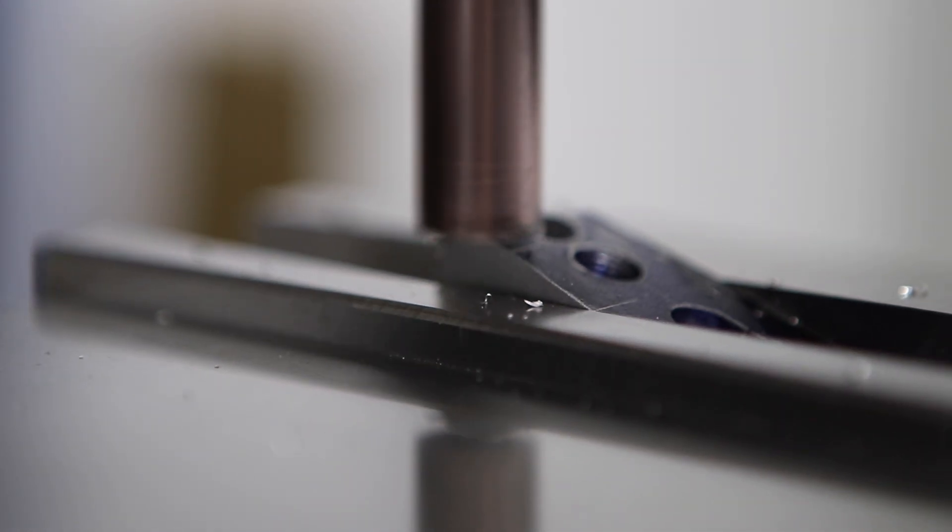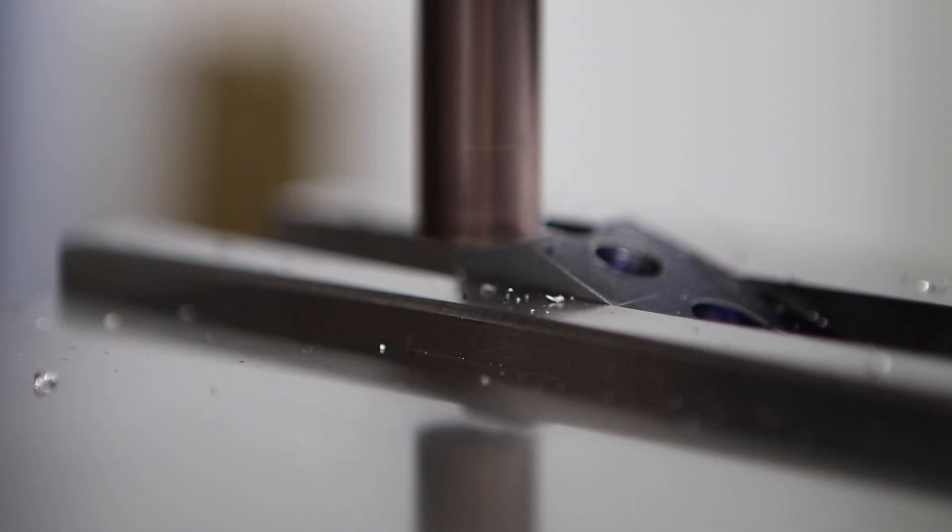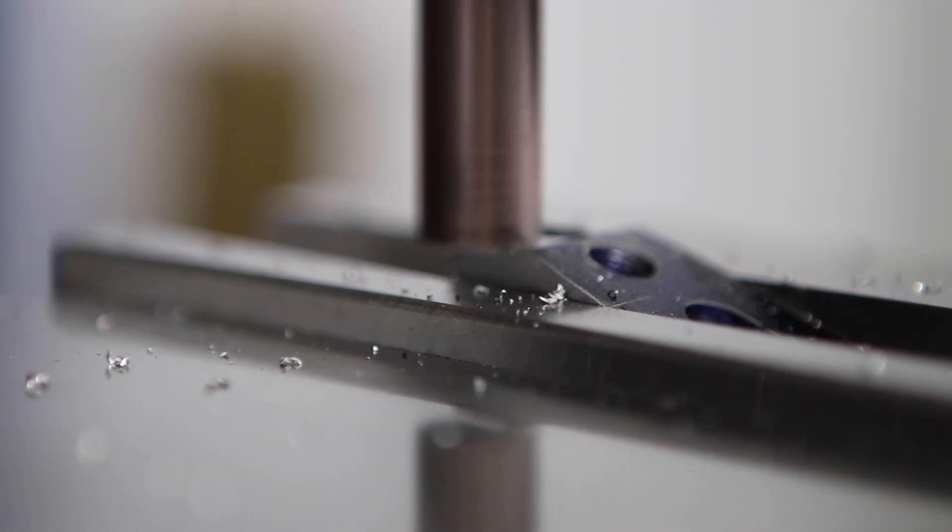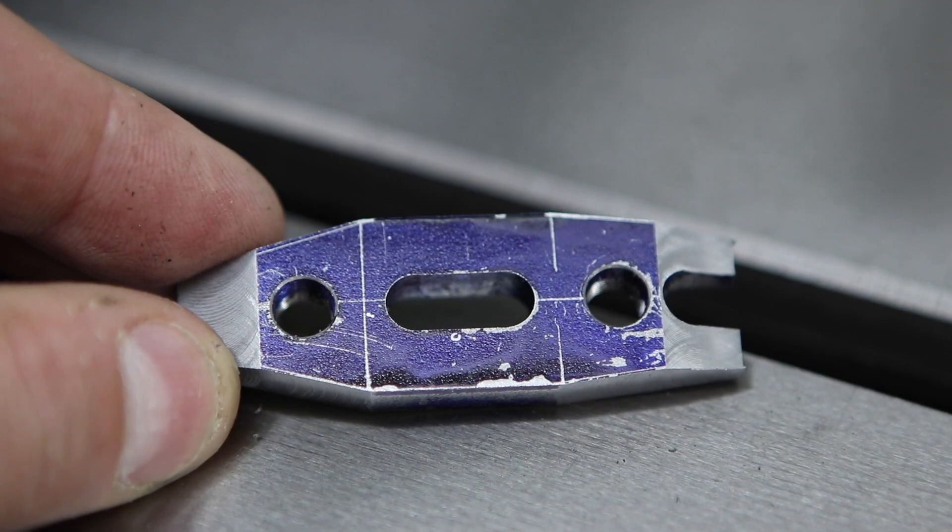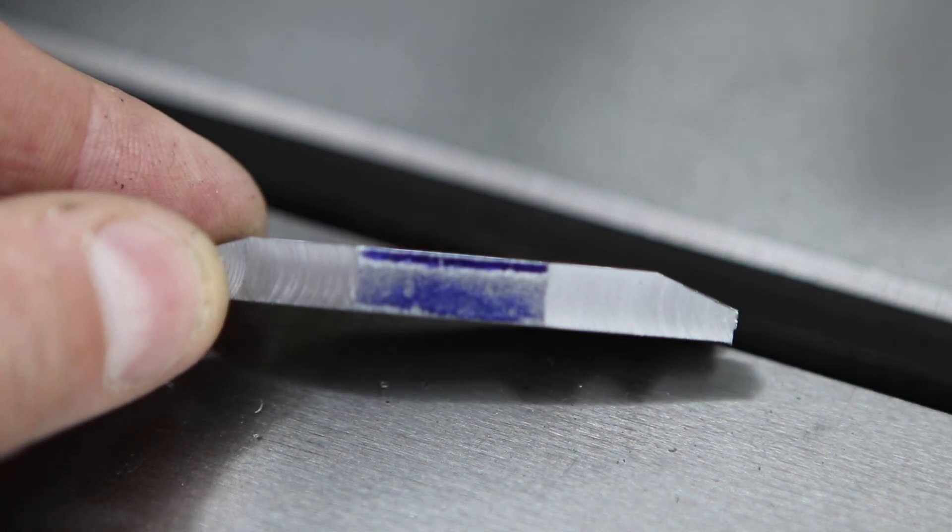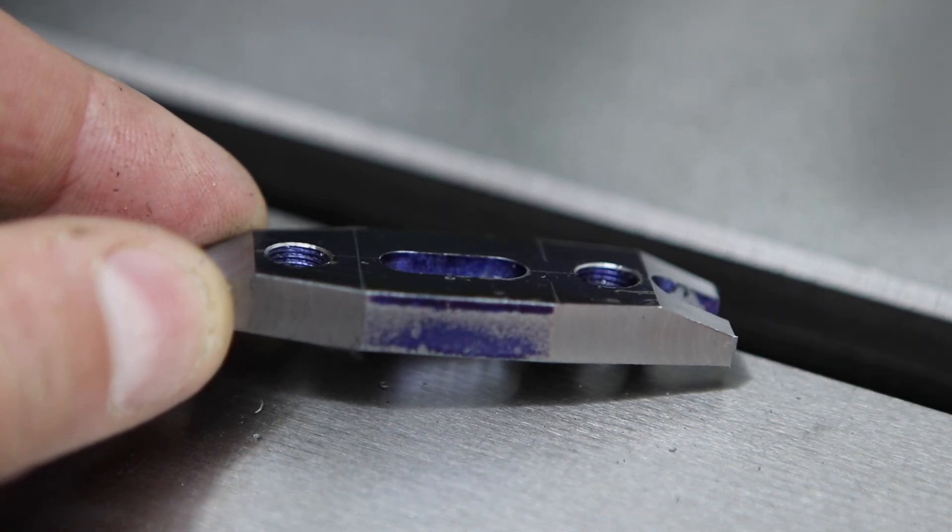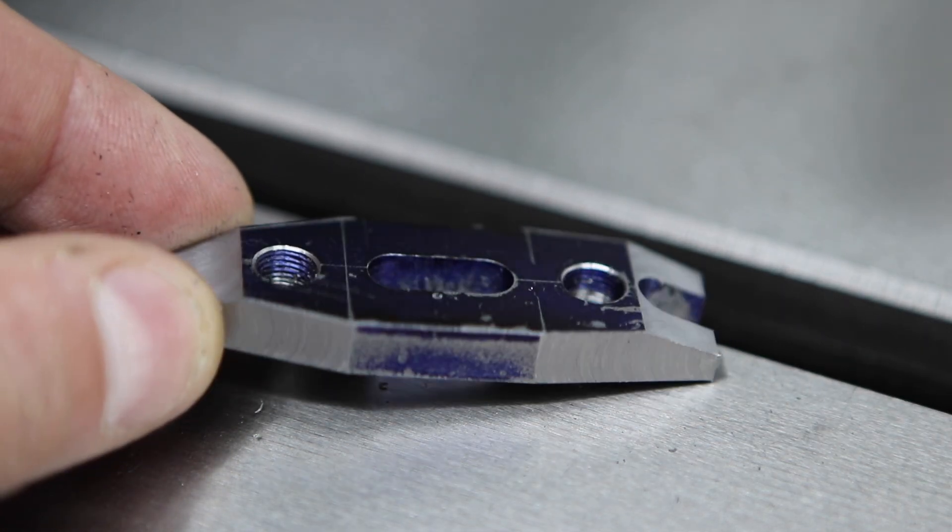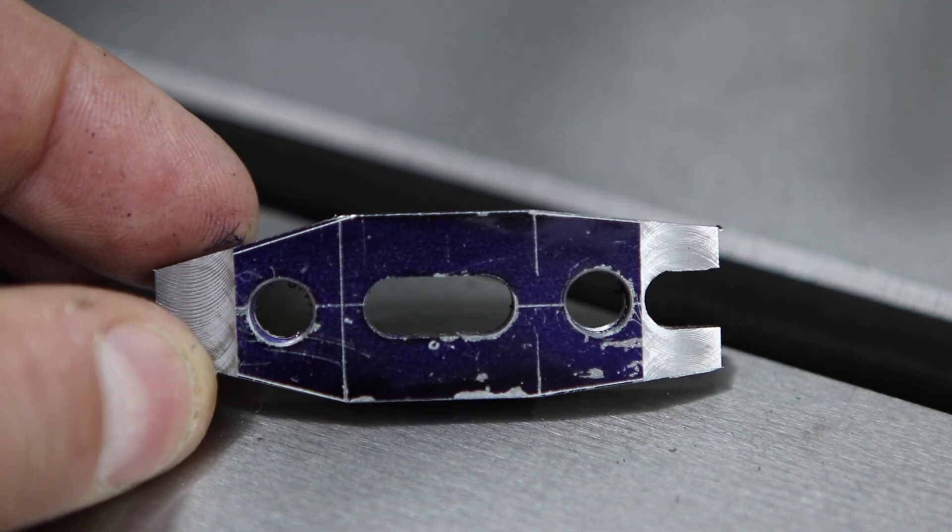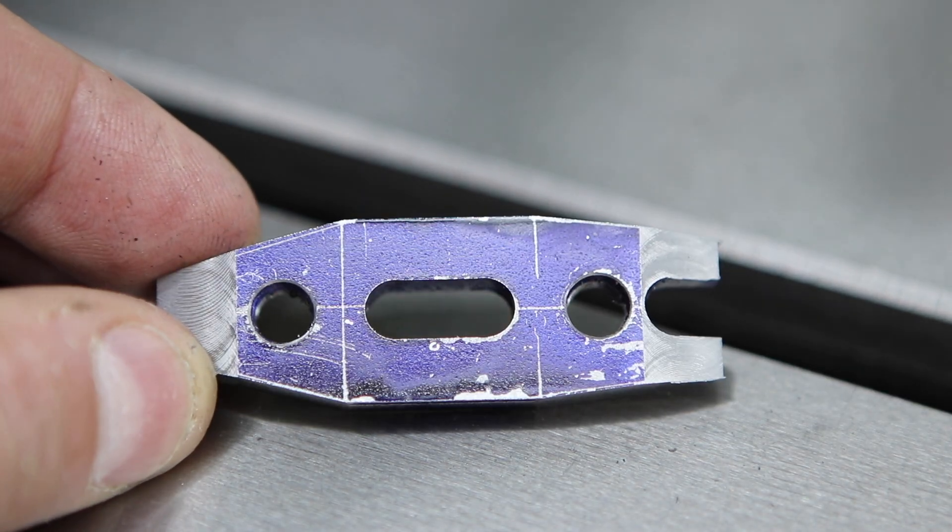And using the same process, I go on to cut the chamfers on the ends of the finger. So that's the finger finished. All I need to do now is break those edges, do a little bit of deburring, clean up a little bit and maybe rub it on some paper to get a nice brushed finish.